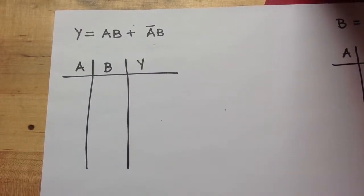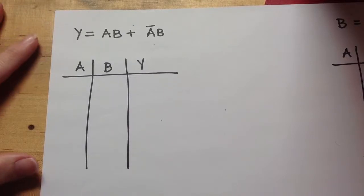So now let's look at going the other way. I have a logic expression, and I'd like to take that and turn it into a truth table.